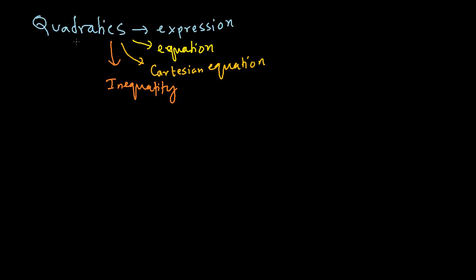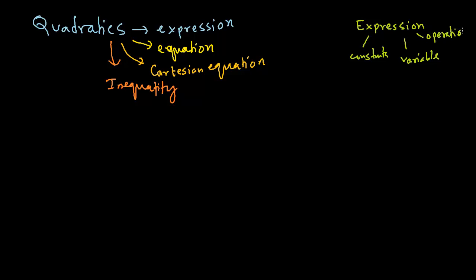So first, the basic thing: what is a quadratic expression? A quick review of what an expression could refer to. An expression is made up of numbers, meaning constants, then symbols or variables, and operations — plus, minus, multiplication, division. So an expression is made up of constants, which are numbers, variables like x, and operations such as plus, minus, multiplication, and division.